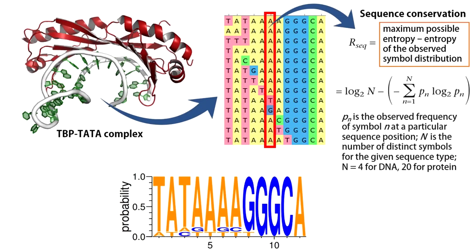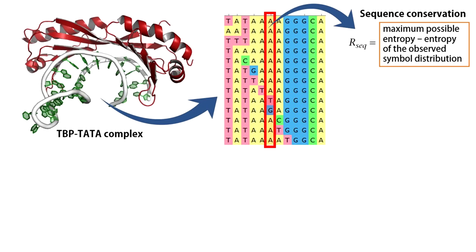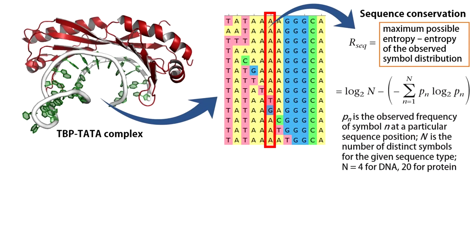We have shown you an example of 15 Tata sequence variants, all of which accommodate TBP binding. We can measure the sequence conservation at various sites as the difference between maximum possible entropy and the entropy of the observed symbol distribution. See the expression here.